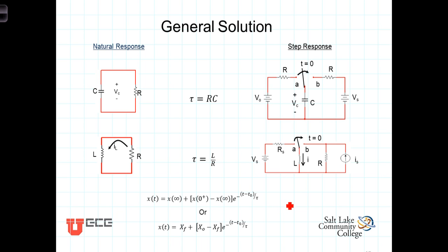In fact, we can say then in general that any voltage or current x as a function of time in such circuits will equal the final value, or the value that the quantity approaches as time approaches infinity, plus the initial value of that quantity or circuit parameter minus the final value times e to the minus t minus t0 over tau.